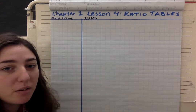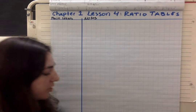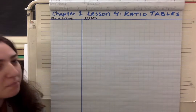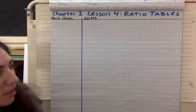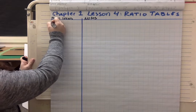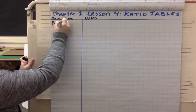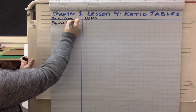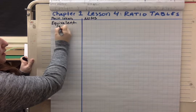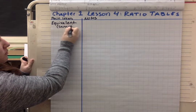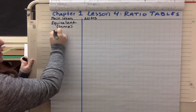First thing I want to talk about when we're talking about ratio tables is equivalent ratios. Let's talk about the word equivalent. Equivalent just means the same. So here I wrote equivalent, and in parentheses I'm going to write same — so we know that it means the same. So, equivalent ratios.